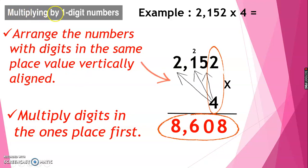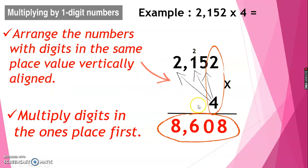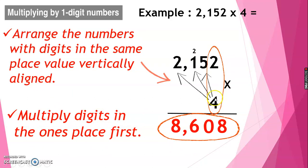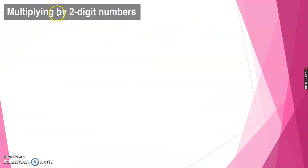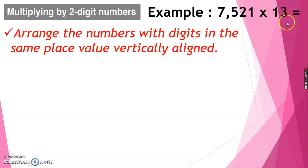Multiplying by 1-digit numbers: first, arrange the numbers with digits in the same place value vertically aligned. Multiply the digits in the ones place first. Next, multiplying by 2-digit numbers. Example: 7,521 times 13.